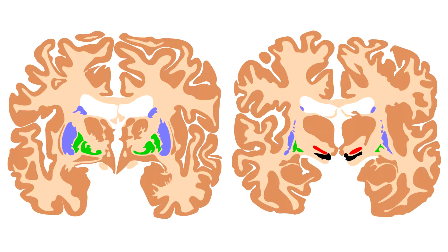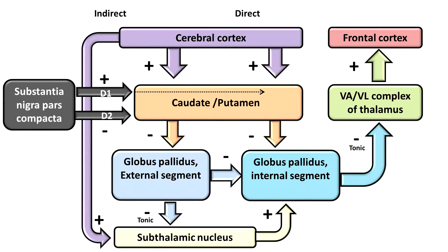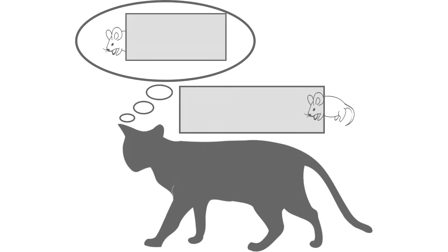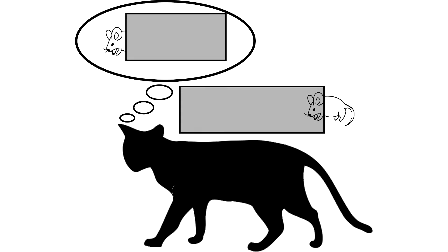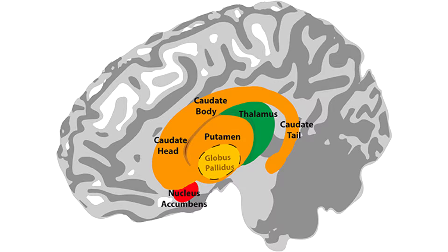The basal ganglia can be divided into the so-called direct and indirect pathways. The neurons modulate both in anticipation of and during movements. The basal ganglia nuclei consist of the caudate and the putamen, which make up the striatum.